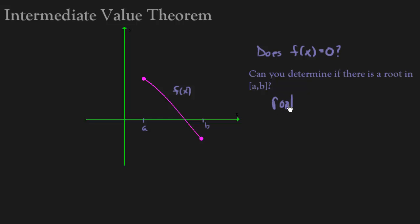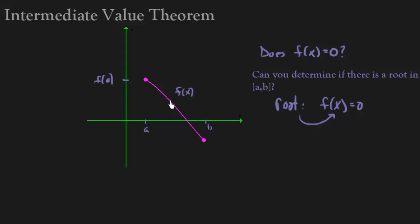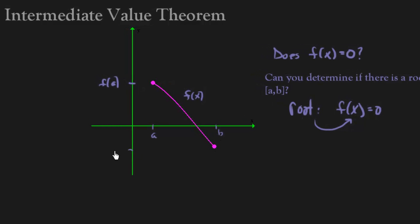A root, for us, means f of x equals 0, like I have up here. So the root is actually this x value that gives me a function value of 0. So come over here and take a look at this graph. We have a, and here's f of a, and here's b, and then there's f of b.